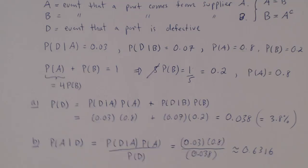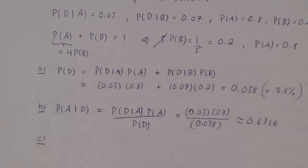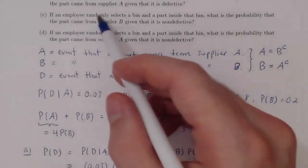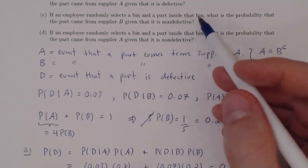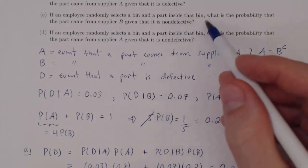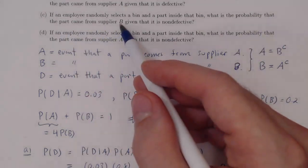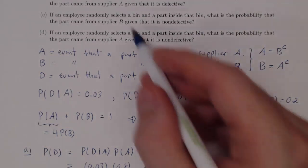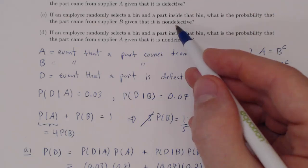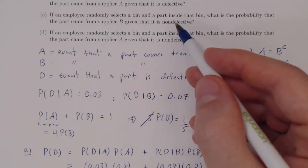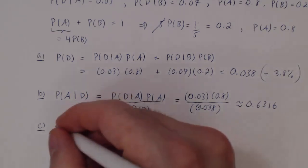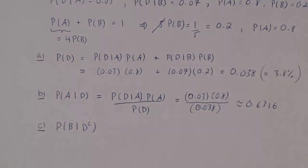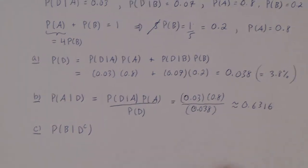That's P(A|D) ≈ 0.6316. Part C: an employee randomly selects a part — what is the probability the part came from Supplier B given that it is non-defective? So we're looking for P(B|D complement).